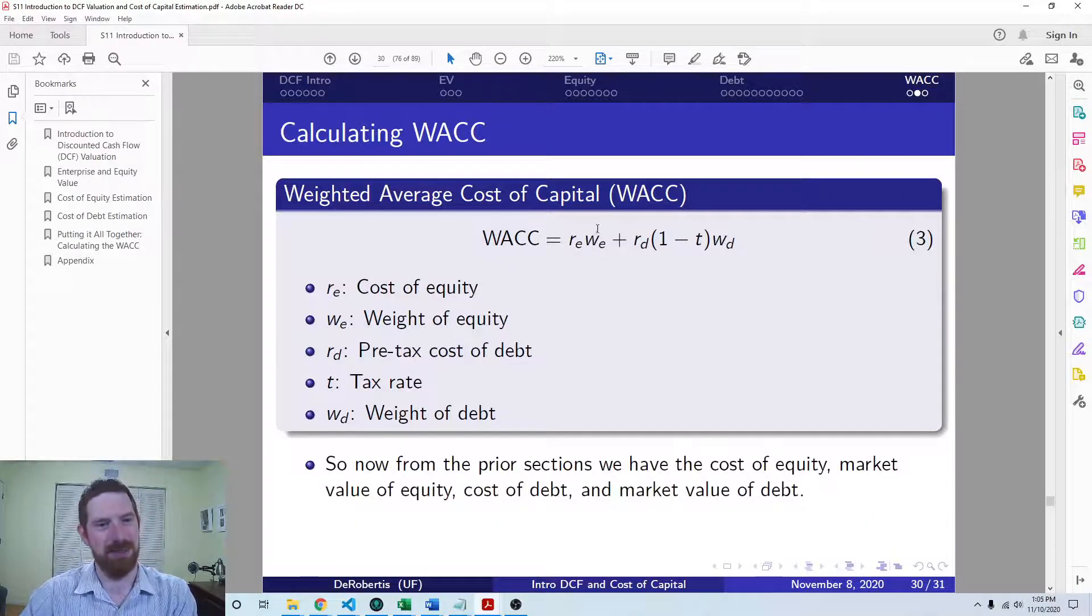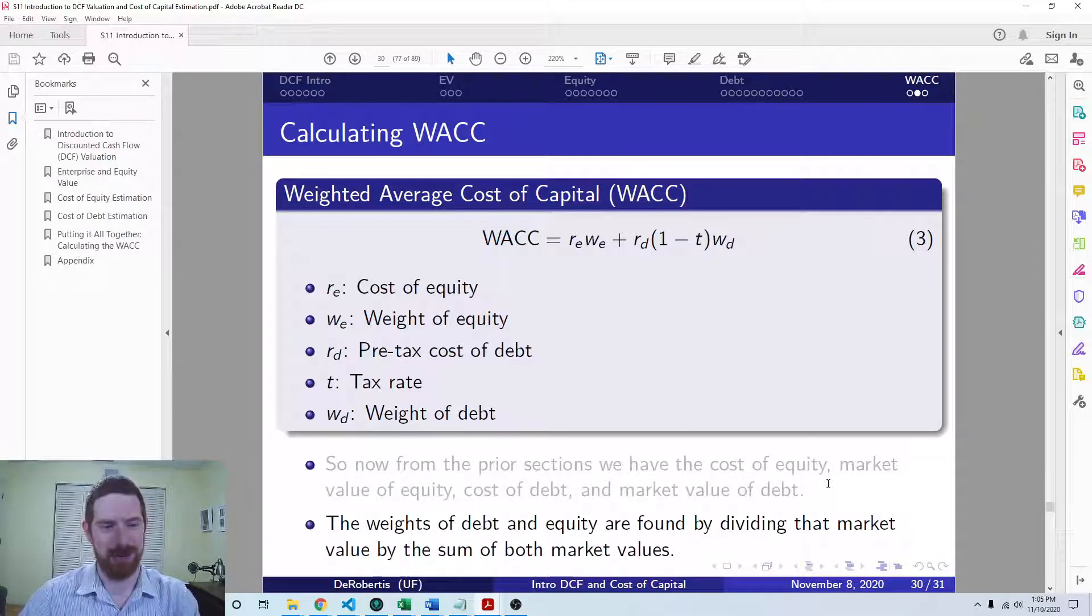So this puts together everything that we have calculated so far. We've already calculated the cost of equity, we've calculated the cost of debt, calculated the tax rate. So there is one small calculation left to do before we get to the WACC itself, which is then calculating the weights of debt and equity.